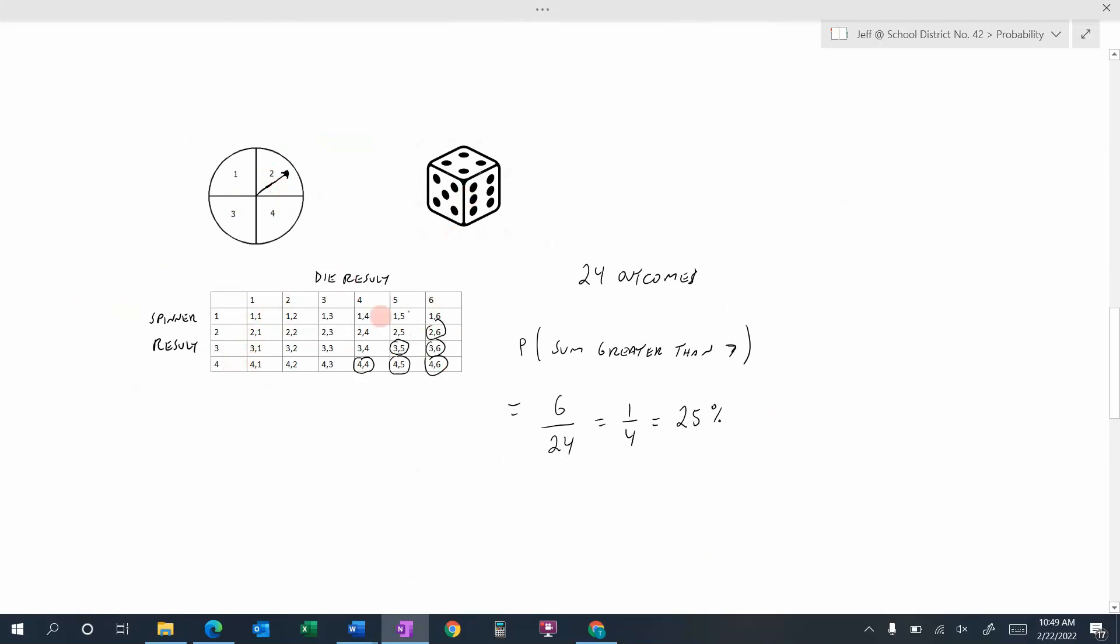And then we had all the outcomes in the box here and we counted them up in the table and we figured out there were 24 outcomes.